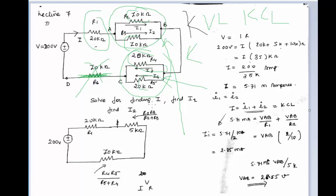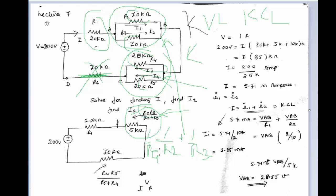Applying the parallel circuit equations, you will get R2·R3 divided by R2+R3 — that is the equation to solve. Alternatively, it can be written as 1/R1 + 1/R2. In this case it will be R2 and R3. When you solve for R equivalent, it is written as R2·R3 divided by R2+R3.